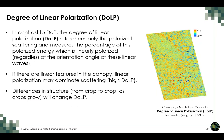The degree of linear polarization is not the same as degree of polarization. It references only the polarized scattering and measures the percentage that is linearly polarized — including any linear polarization regardless of orientation angle. If there are linear features in the canopy, the degree of linear polarization may be higher. The dominance of linear structures differs among soybean, wheat, canola, and corn, and the linearity of canopy structure also changes as crops develop. An example of degree of linear polarization calculated from Sentinel-1 data for the first week of August at the study site is shown.